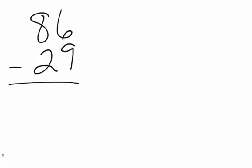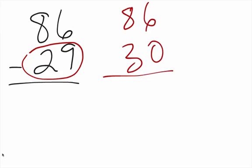Now we have 86 minus 29, and we have to borrow in this situation. What we want to do is round the bottom number, which is 29, up to the next multiple of 10, which will be 30. Then we ask ourselves, how far do we have to go up to get to 30? We only went up 1. So we subtract: 86 minus 30 is 56, plus the 1 that we went up, makes it 57.